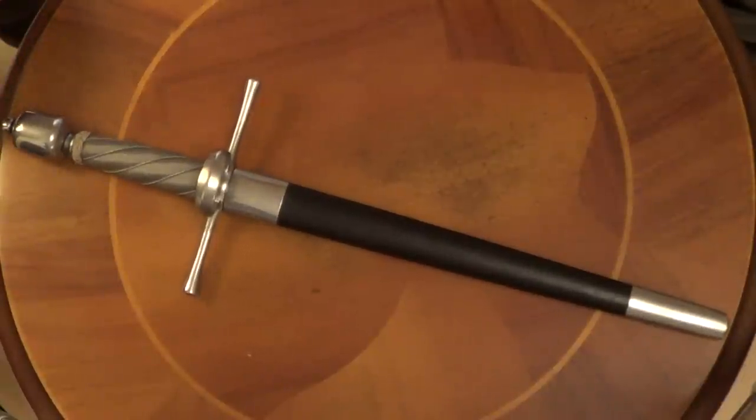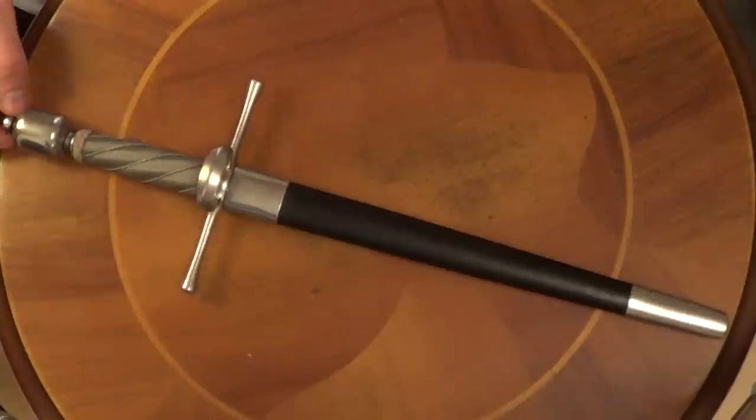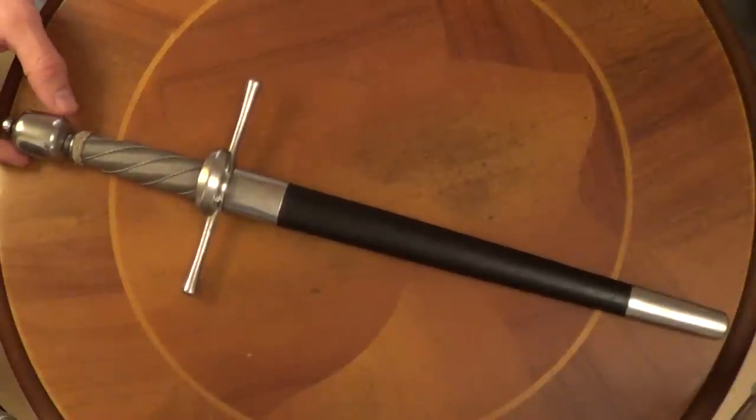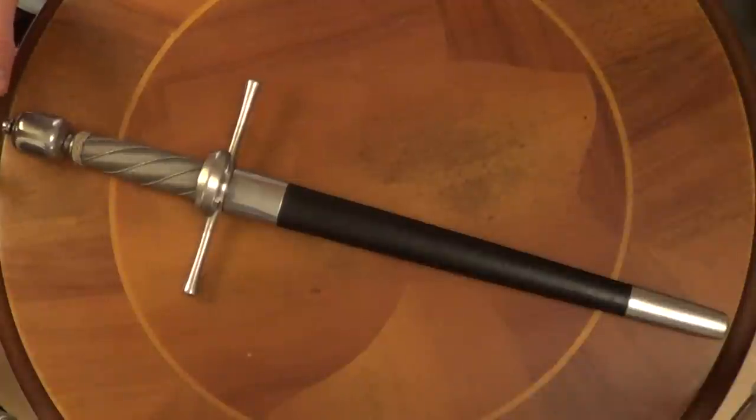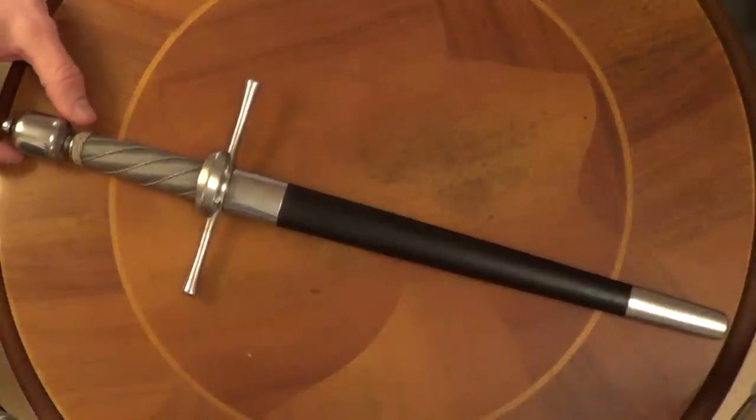So the first thing to say about Hanway is Hanway are an economy to medium range manufacturer. Their quality control is reasonably good. They're made in China, but they're made to reasonably good production standards. Hanway produce a lot of practice weapons which are used fairly widely in the HEMA community including rapiers and sabers and such like, and long swords.